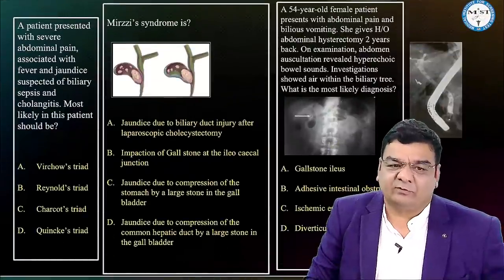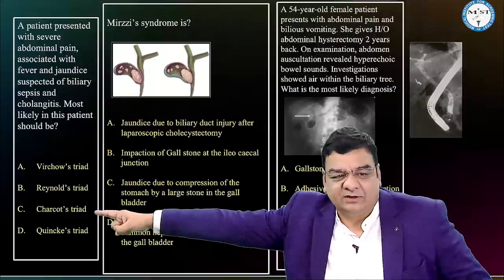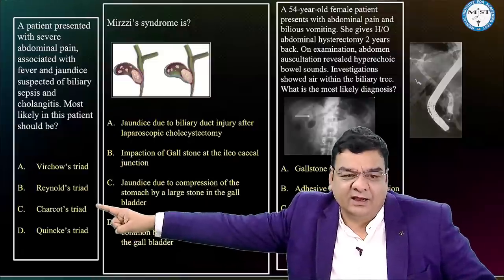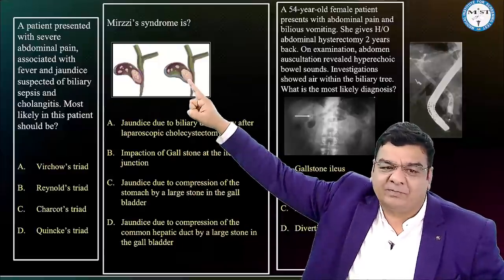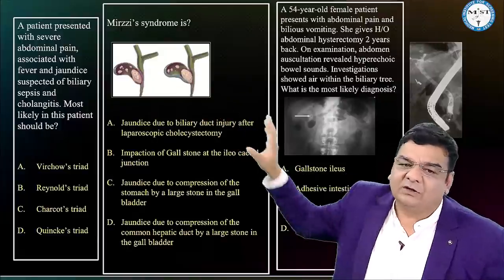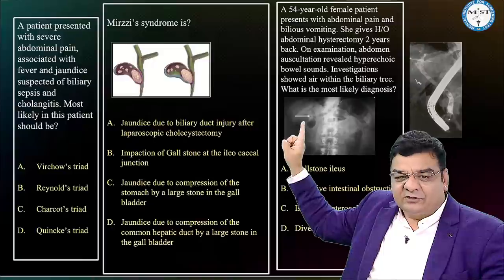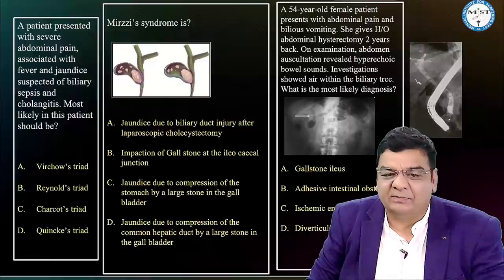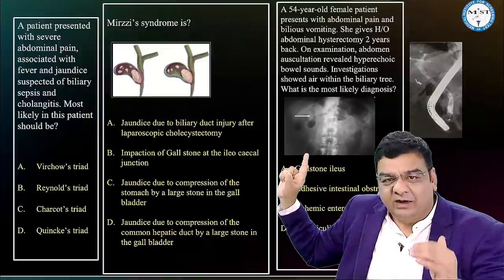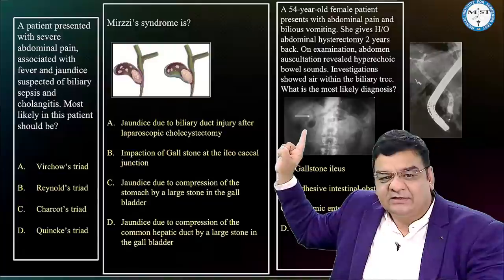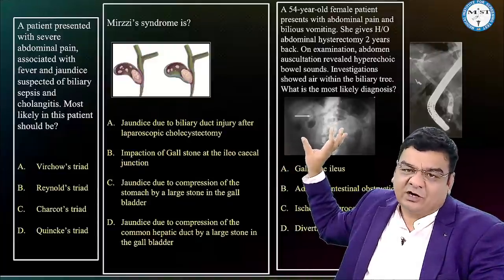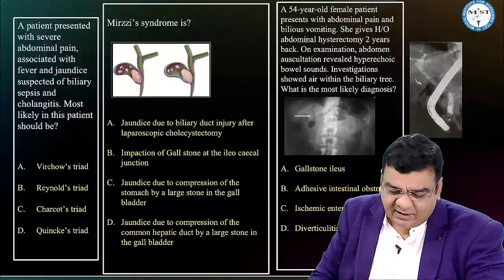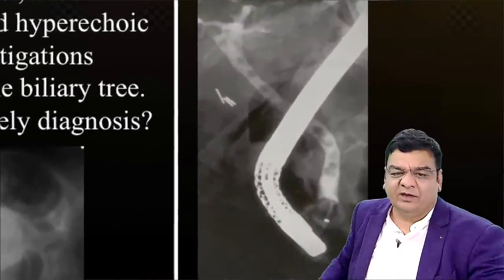Questions may come from gallbladder pathologies: Charcot's triad in cholangitis (pain, fever, jaundice), Reynolds' pentad (pain, fever, jaundice, hypotension, mental confusion) also in cholangitis, Mirizzi's syndrome (compression of common hepatic duct by a large gallstone), and gallstone ileus where a fistula between gallbladder and duodenum allows a stone to slip into the duodenum, causing obstruction at the terminal ileum. In gallstone ileus: multiple air-fluid levels (intestinal obstruction), stone in intestine, and air inside gallbladder (indicating abnormal gallbladder-intestine connection).